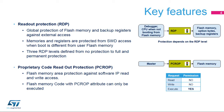Readout Protection, or RDP, is a global mechanism that prevents external read access to flash memory, option bytes, and backup registers. An external access can be gained by using a JTAG connector, a serial wire port, or the boot software embedded in SRAM. Three levels of RDP protection are defined, from Level 0, which offers no protection at all, to Level 2, which has full and permanent protection.